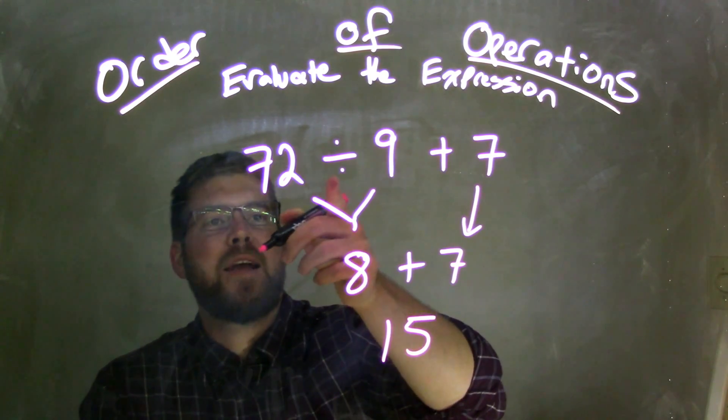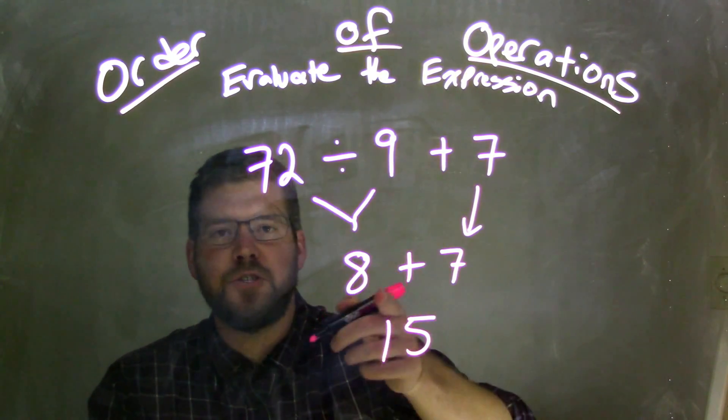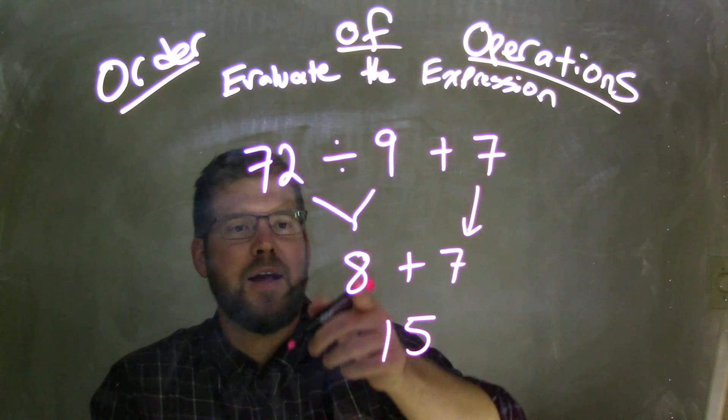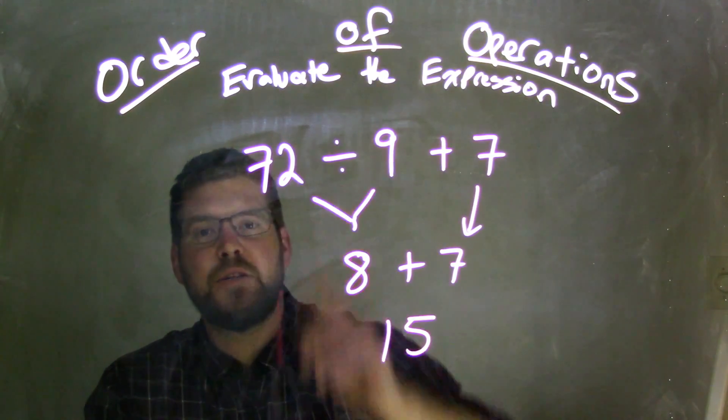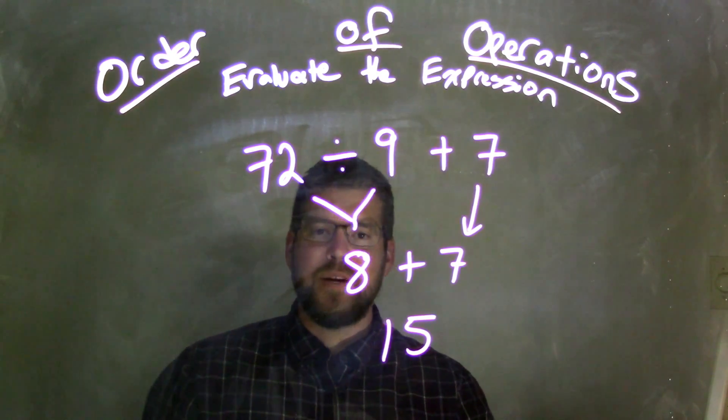So again, we have division first, then addition. We took 72 divided by 9 and got 8. Then we can do addition, because addition comes after division in the order of operations.